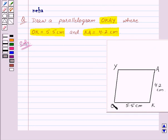And we know that in a parallelogram opposite sides are parallel and equal. So, O-K is equal to Y-A equal to 5.5 cm and K-A is equal to O-Y equal to 4.2 cm.